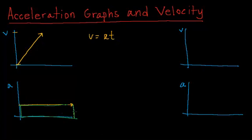Now let's say that this time were 10 seconds, and the acceleration were 5 meters per second squared. Now the area of this would of course be 50 meters per second, because you have 5 meters per second squared times 10 seconds.